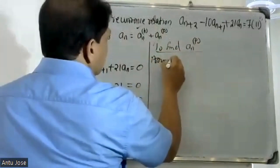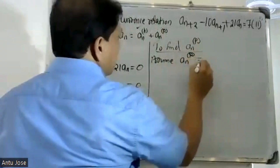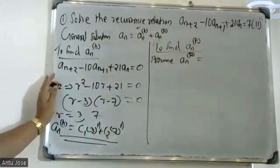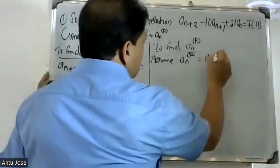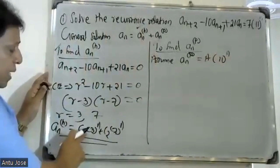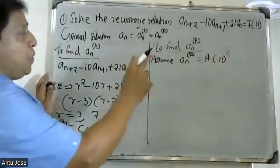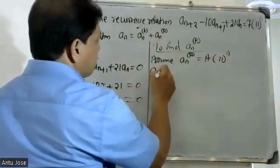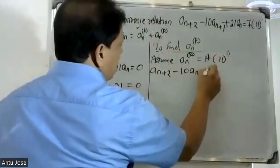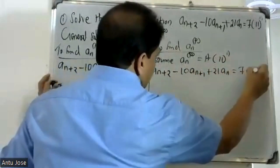To find the particular solution, we assume a(n,p) = A·11^n. Substituting into the recurrence relation: A·11^(n+2) - 10·A·11^(n+1) + 21·A·11^n = 7·11^n.